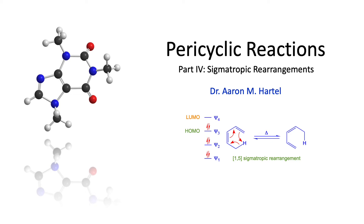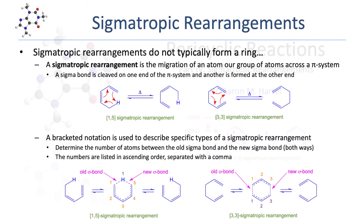In this lesson, we wrap up our look at pericyclic reactions, focusing on sigmatropic rearrangements, including the Cope and Claisen rearrangements. Unlike electrocyclizations and cycloadditions, sigmatropic rearrangements are pericyclic reactions that do not typically form a ring.